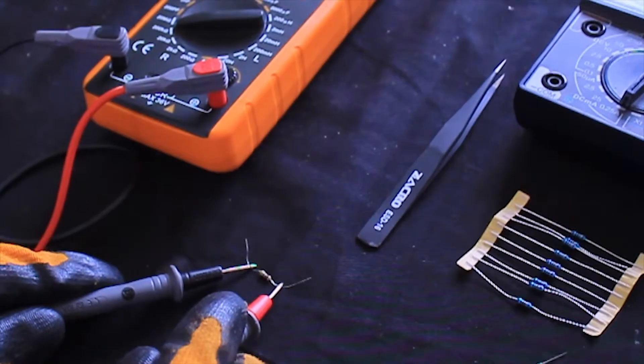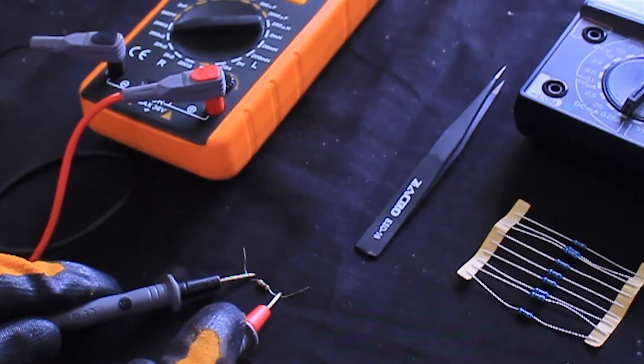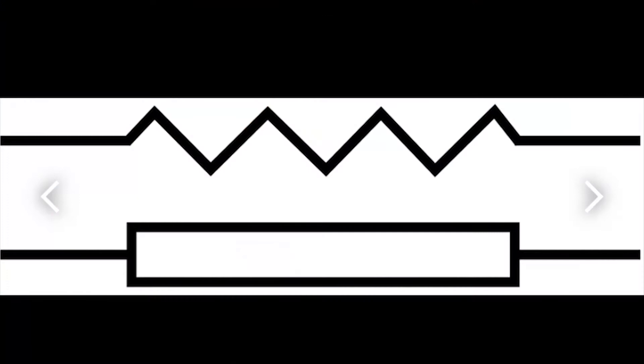Types of resistors. There are two types of resistors. The fixed resistor is a passive component, and the electronic symbol of a resistor is shown here.